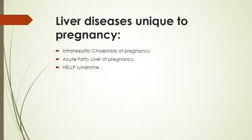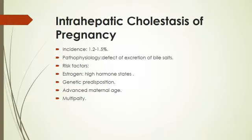Liver diseases unique to pregnancy, occurring only during pregnancy, include physiological changes of the liver during severe hyperemesis gravidarum, and HELLP syndrome. Intrahepatic biliary cholestasis of pregnancy has an incidence of 1.2 to 1.5% of all pregnancies. Its pathophysiology is a defect of excretion of bile salts. Risk factors include high levels of estrogen during pregnancy, genetic predisposition running in certain families, and advanced maternal age.